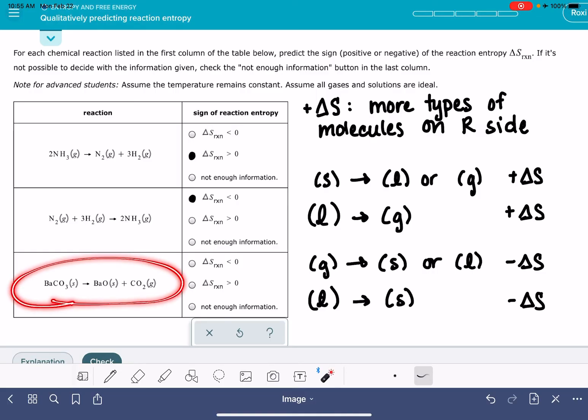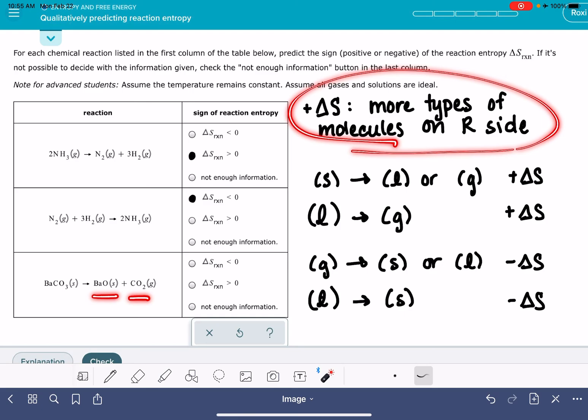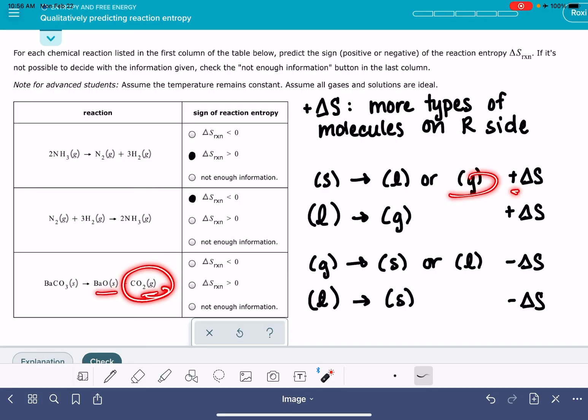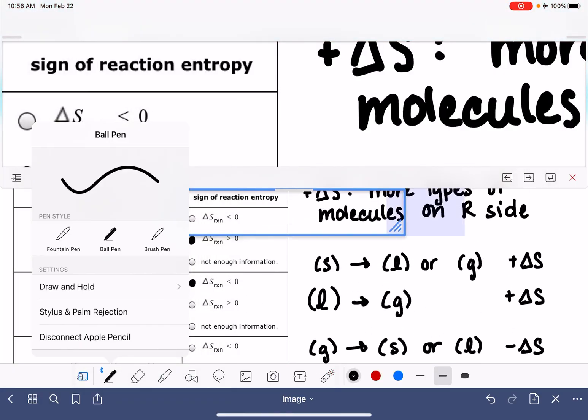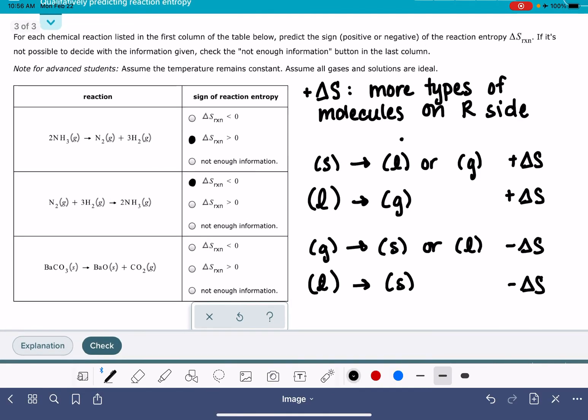For this last problem, we have one reactant on the left and two on the right, so this gives us indication that it's a positive value of delta S. We also have solid being converted to a gas, so this is also a positive delta S. So this would be greater than zero.